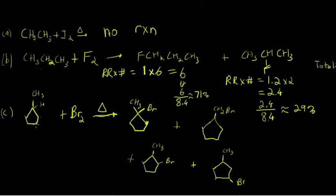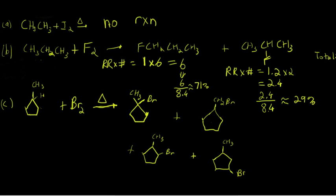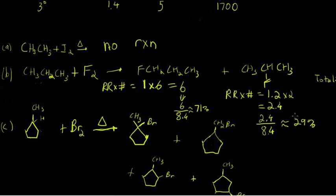You could also have substitution at either of these two carbon atoms, which are equivalent. And that'll result in this product here. Now let's look at the relative reactivities of each of these CH bonds that result in the substitution products, as well as the number of hydrogens that could be substituted to give any particular product.